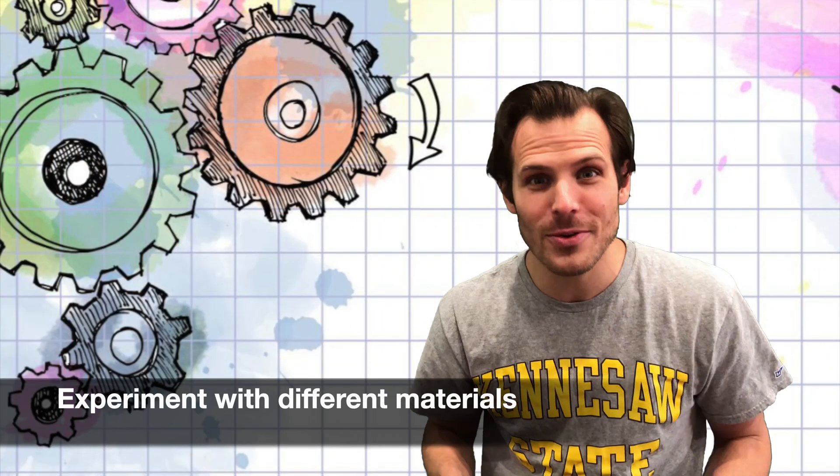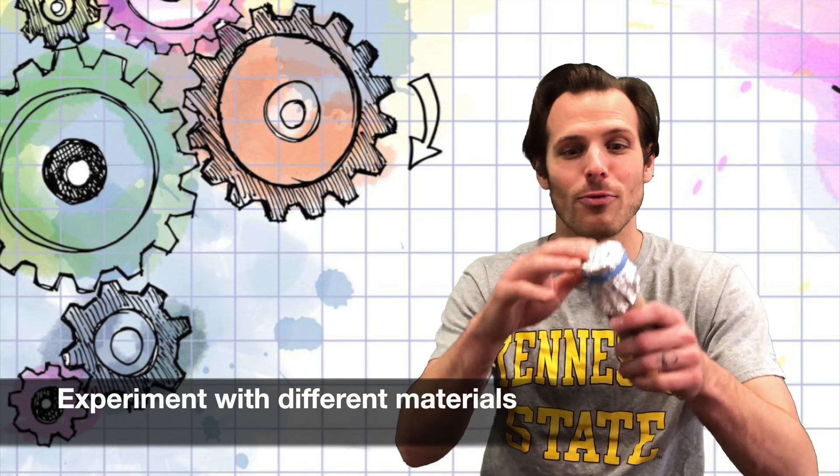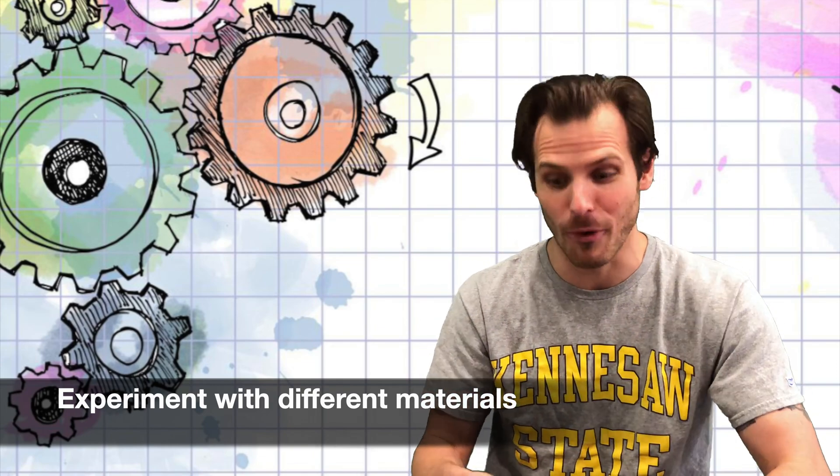You can also experiment with the different types of resonators that you're putting over your kazoo. For example, I used wax paper and aluminum foil for this kazoo. It's a little bit different. It has kind of like a muted trumpet sound, if you've ever seen that. If you haven't, check it out on Google.